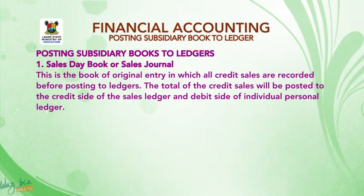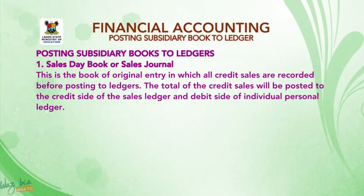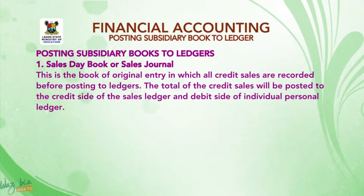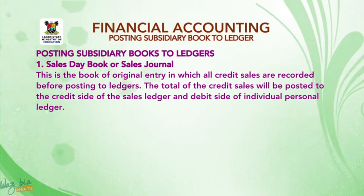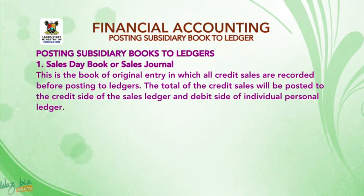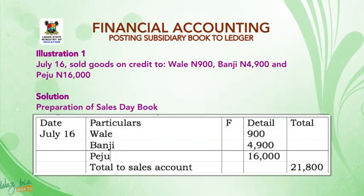Sales day book, or sales journal: this is the book of original entry in which all credit sales are recorded. Before posting to ledgers, the total of the credit sales will be posted to the credit side of the sales ledger and the debit side of individual personal ledger.